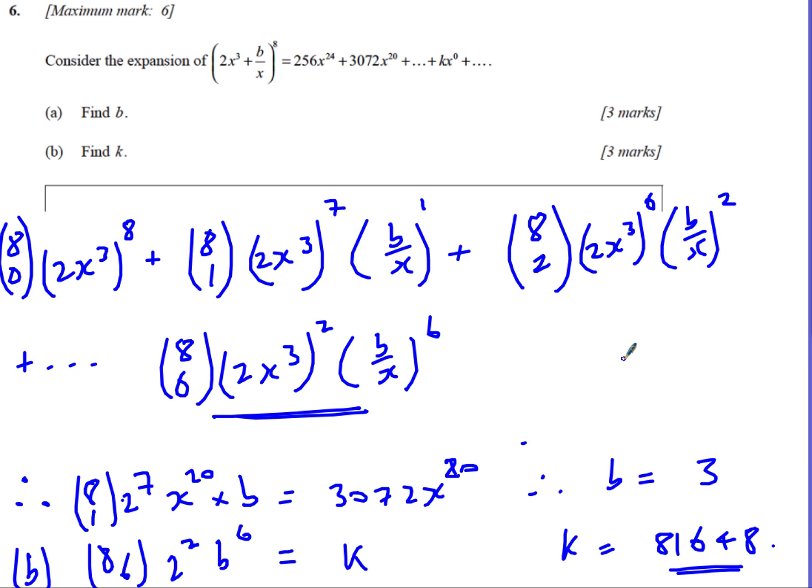And then the second bit, I'm looking for the bit where I end up with basically no x. So I'm just ending up with a constant term. Now, again, if you carry on your expansion, you're going to get 8 choose 6, 2, x 3 squared and b over x to the power 6. You'll notice here that 3 times 2, that's going to give me an x to the 6. B and 6, so that's going to be x to the... Sorry, x and 6, that's going to be x to the power 6 on the bottom. So the xs are going to cancel. So this is the term that I want that's going to give me basically just the constant term. So I do 8 choose 6. I've got 2 squared and I've got b^6. That thing there is going to be the coefficient. So therefore, k, which is my coefficient, is 81,648.